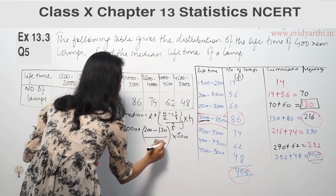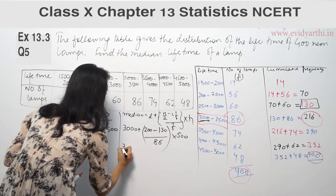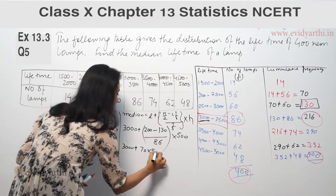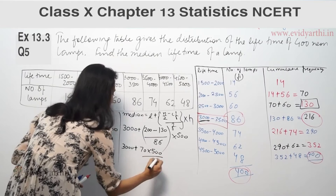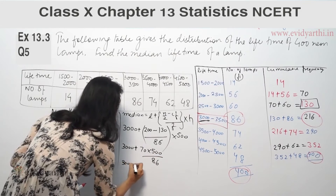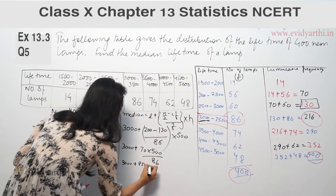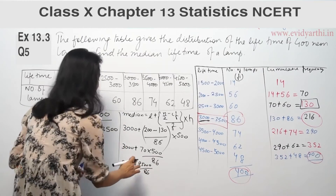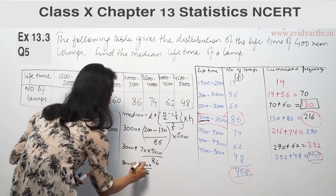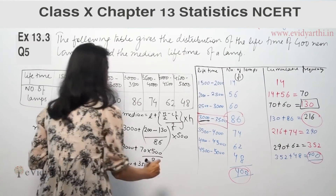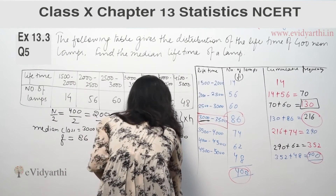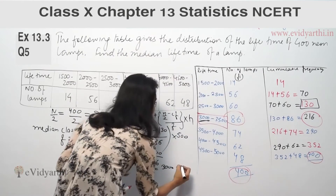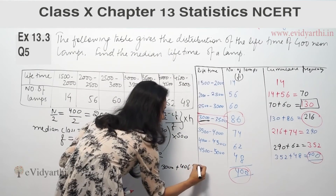Substituting the values: Median = 3000 + ((200 − 130) / 86) × 500 = 3000 + (70 × 500) / 86 = 3000 + 35000 / 86. Calculating 35000 by 86 gives approximately 406.976. So the median is approximately 3406.976.